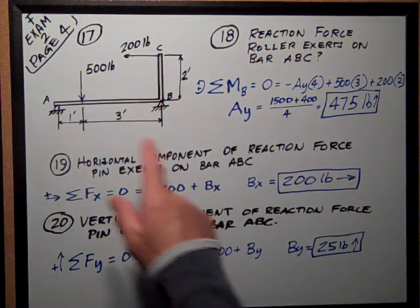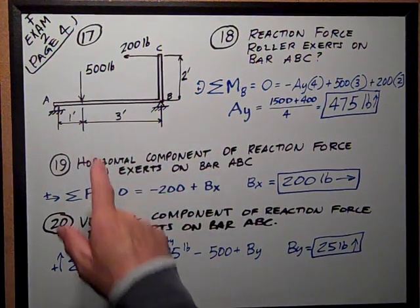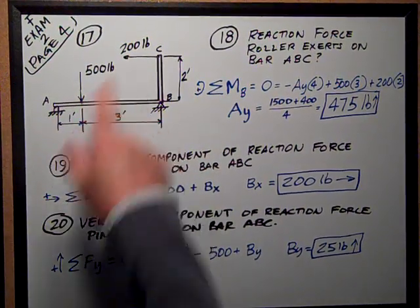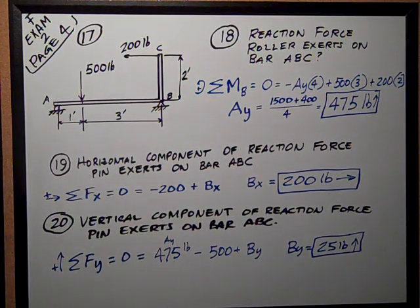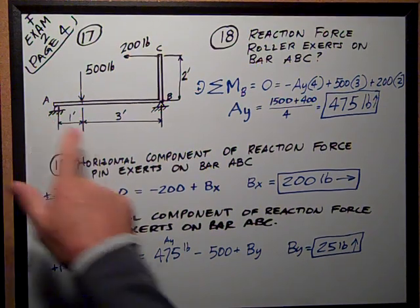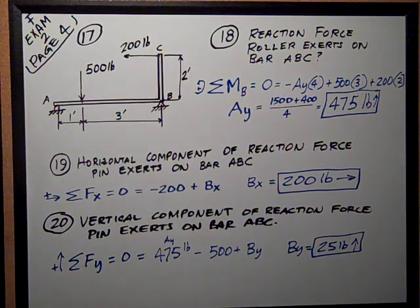We had an L-shaped member loaded with two loads, 500 pounds and 200 pounds, as shown. We have a roller at A and a pin connection at B.